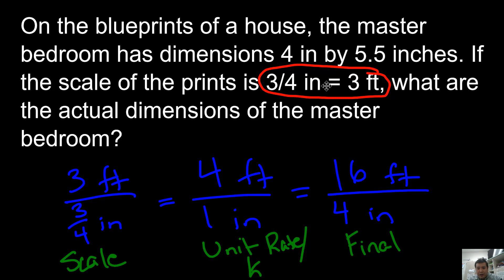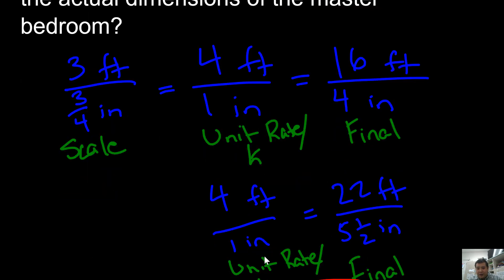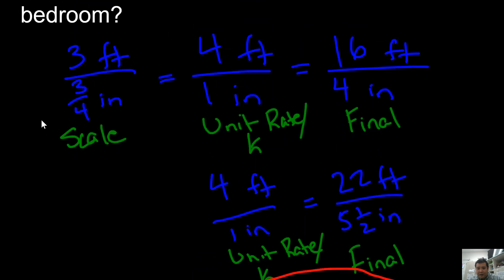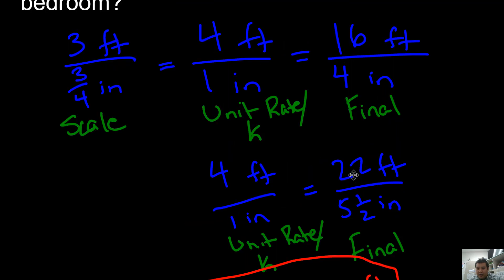The last problem has a scale of three feet to three-fourths of an inch. Dividing three by three-fourths gives us the unit rate of 4 feet per 1 inch. Applying this to both the length and the width: four inches on the drawing gives 16 feet, and 5.5 inches gives 22 feet. So the final answer for the actual dimensions is 16 by 22 feet.